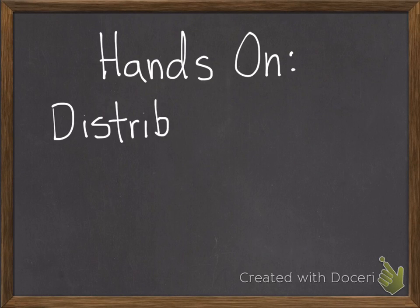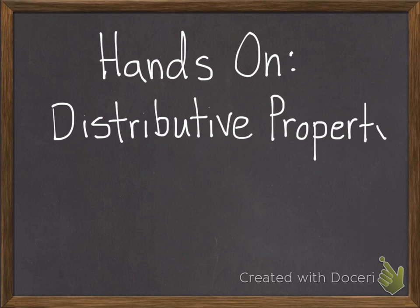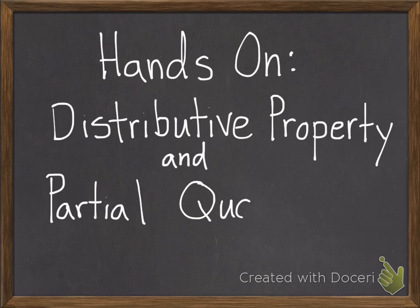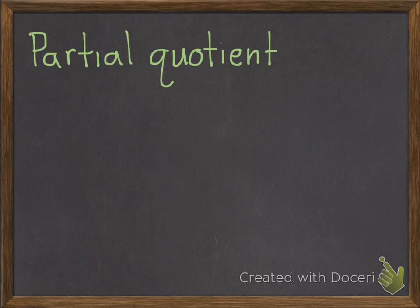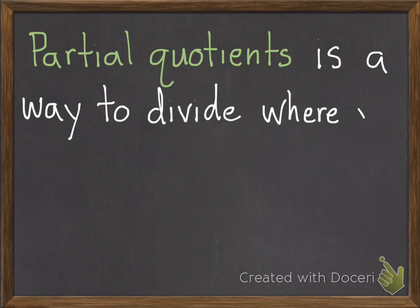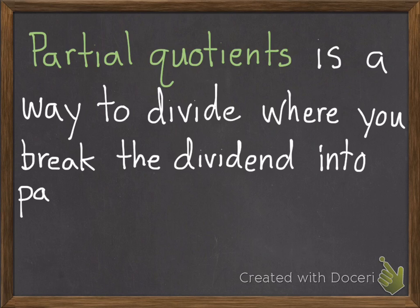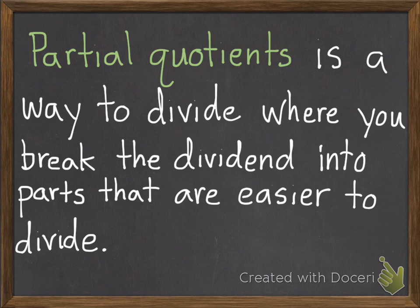Today we're going to have a hands-on lesson where we use the distributive property and partial quotients. Partial quotients is a new vocabulary word. Partial quotients is a way to divide where you break the dividend into parts that are easier to divide.